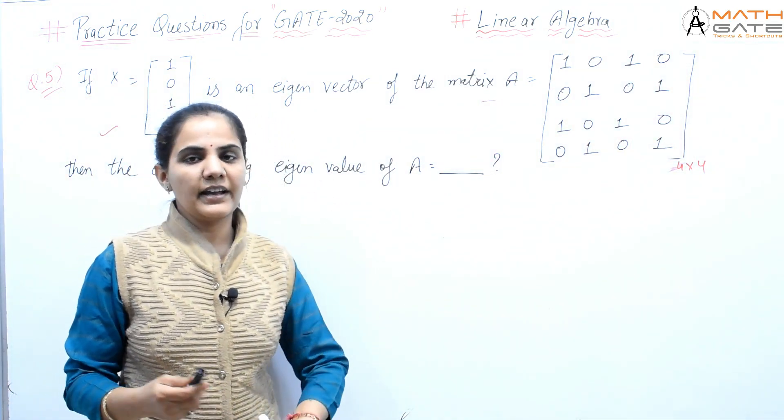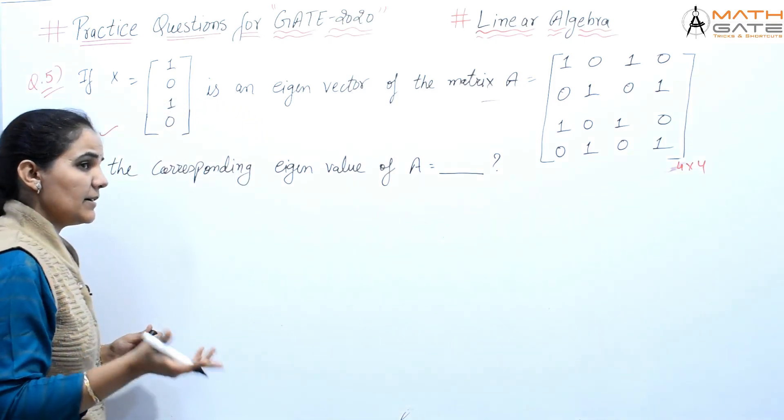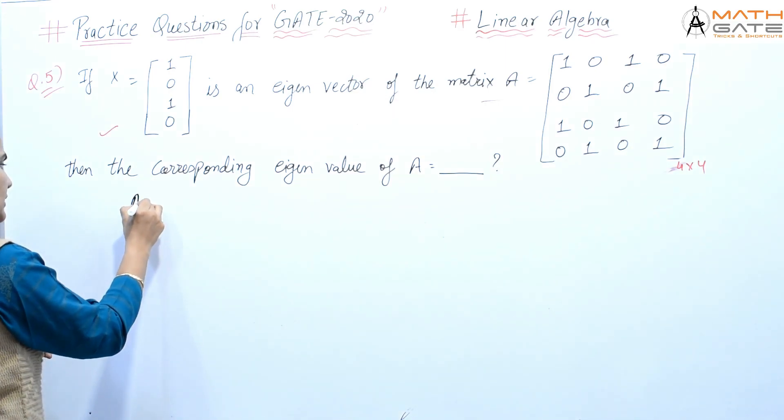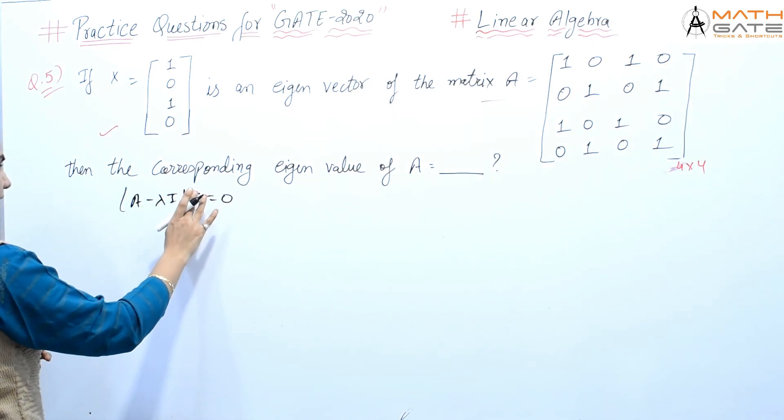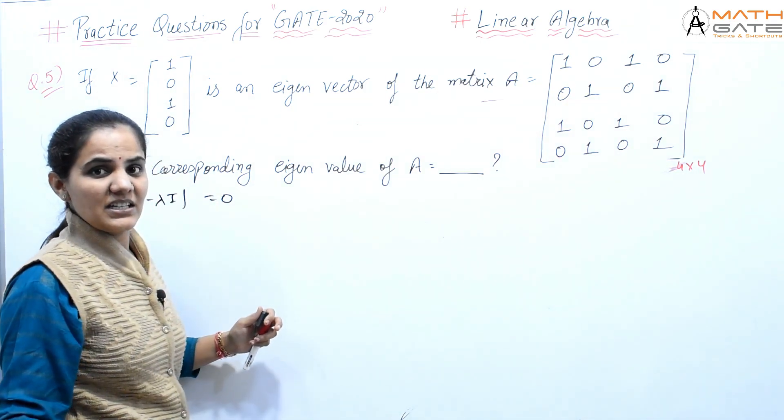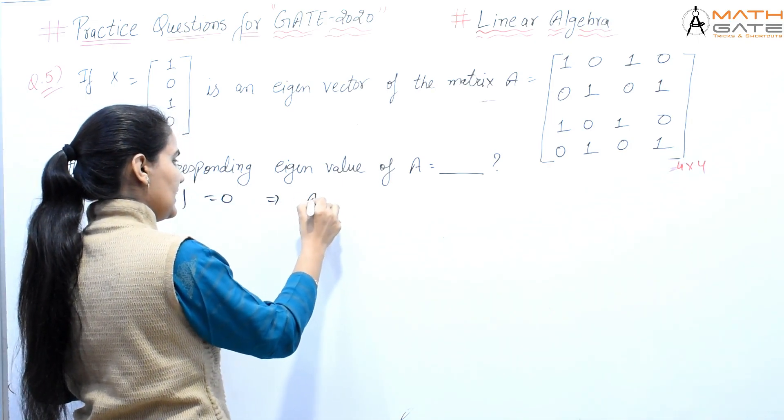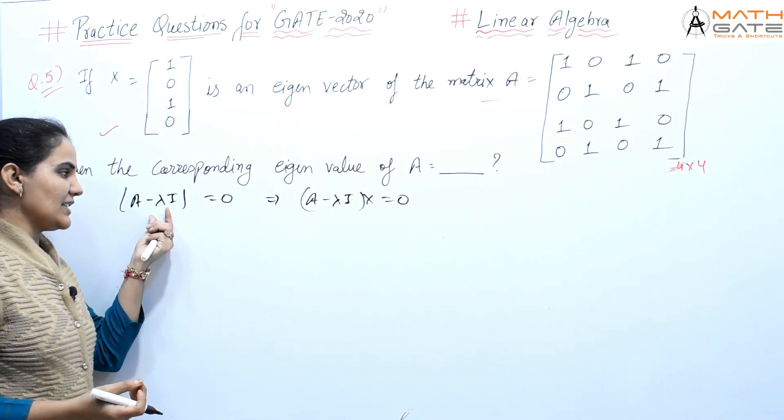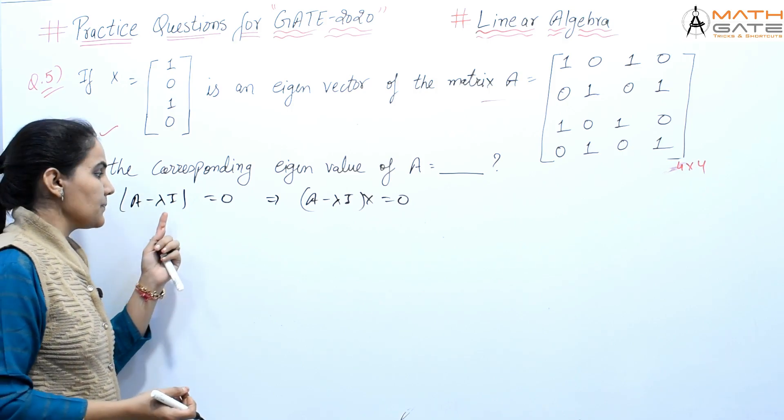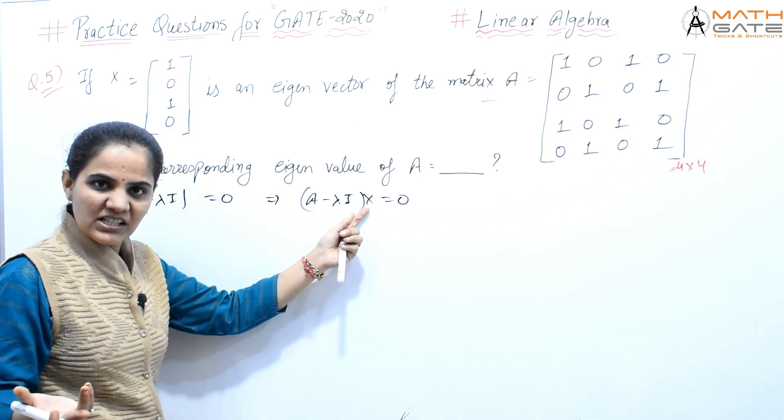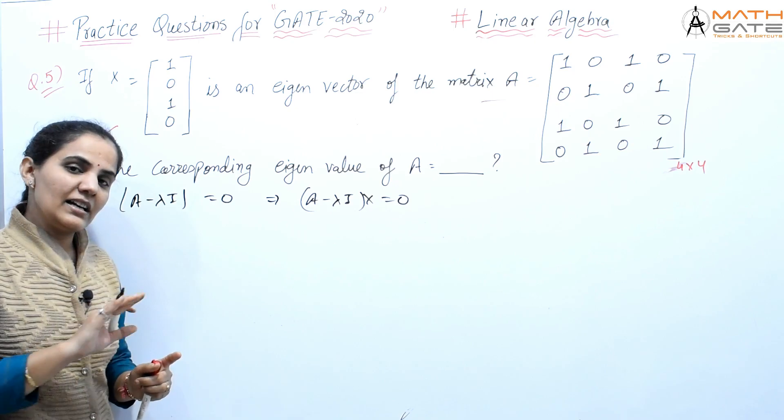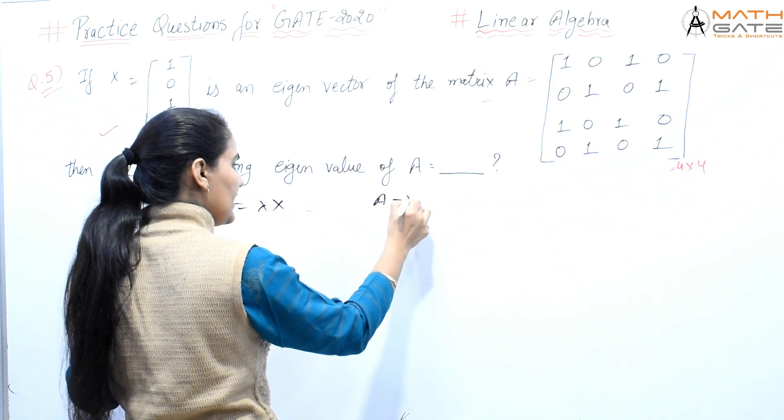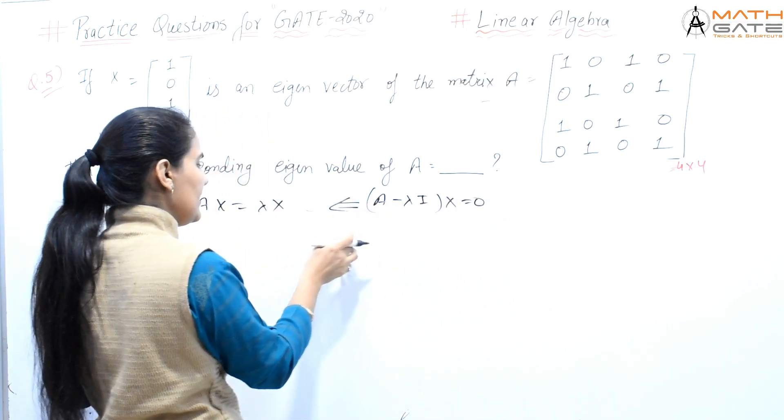We need to find the corresponding eigenvalue. As we've already discussed in our linear algebra segment on eigenvalues and eigenvectors, eigenvalues are calculated from A minus lambda I times x equals zero, meaning the characteristic equation mod of A minus lambda I equals zero. From this we find eigenvalues, and eigenvectors come from solving A minus lambda I into x equals zero. Generally, the method is to first find lambda by solving the characteristic equation, then substitute that value to find x.